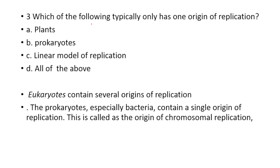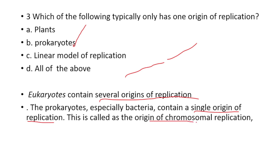Which of the following typically have only one origin of replication? Options: plants, prokaryotes, linear model of replication, all of the above. The answer is prokaryotes. Bacteria specifically contain a single origin of replication, called the origin of chromosomal replication. Eukaryotes, by contrast, contain several origins of replication.